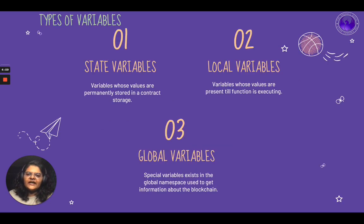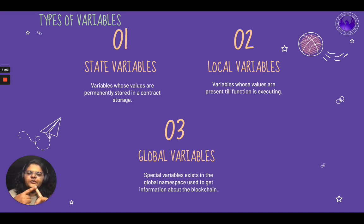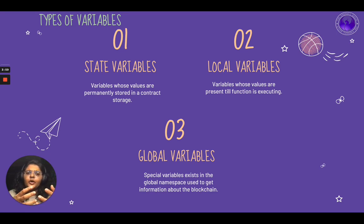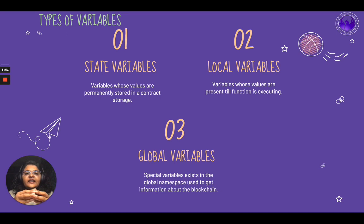Let's take a quick look at the types of variables in Solidity. There are three types of variables in Solidity. The first one, also known as state variables, are very important because they are the ones that are actually storing the information on the blockchain. These are variables whose values are permanently stored in contract storage.